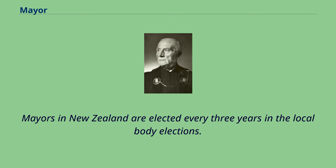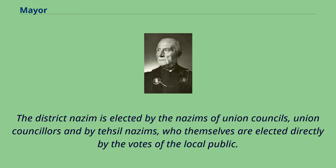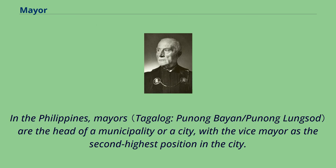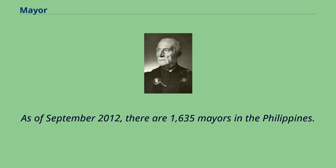Mayors in New Zealand are elected every three years in the local body elections. In Pakistan, a city is headed by the district Nazim and assisted by the Naib Nazim, who is also speaker of the district council. The district Nazim is elected by the Nazsums of union councils, union councillors, and by tehsil Nazsums, who themselves are elected directly by the local public. Council elections are held every four years. In the Philippines, mayors are the head of a municipality or a city, with the vice mayor as the second-highest position. They are elected every three years during the midterm and national elections, and they can serve up to three terms of office. As of September 2012, there are 1,635 mayors in the Philippines.